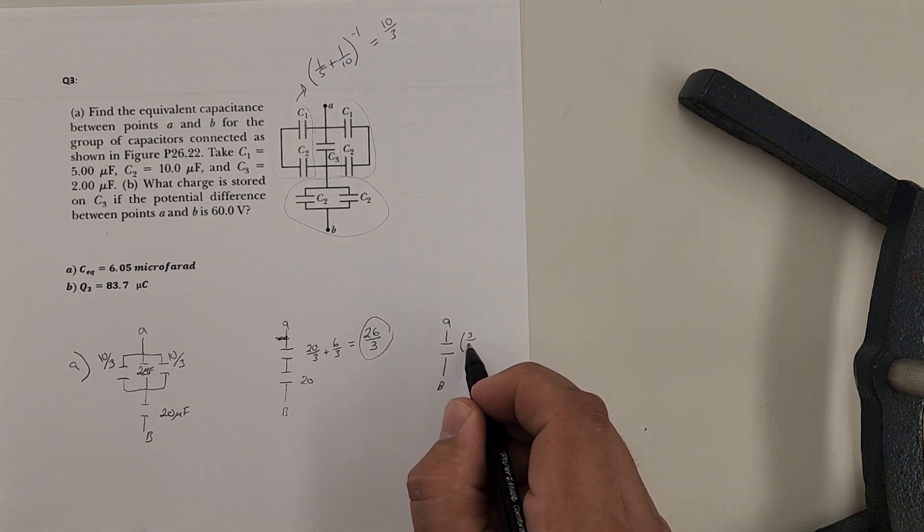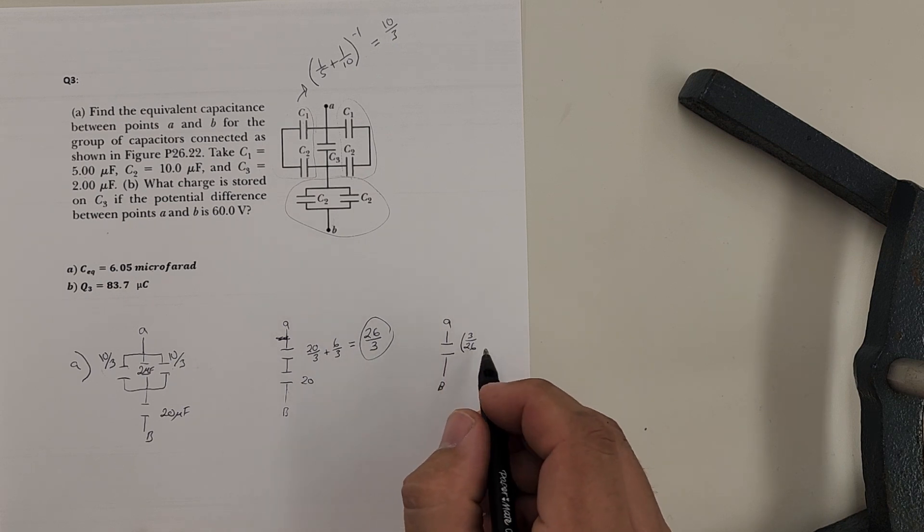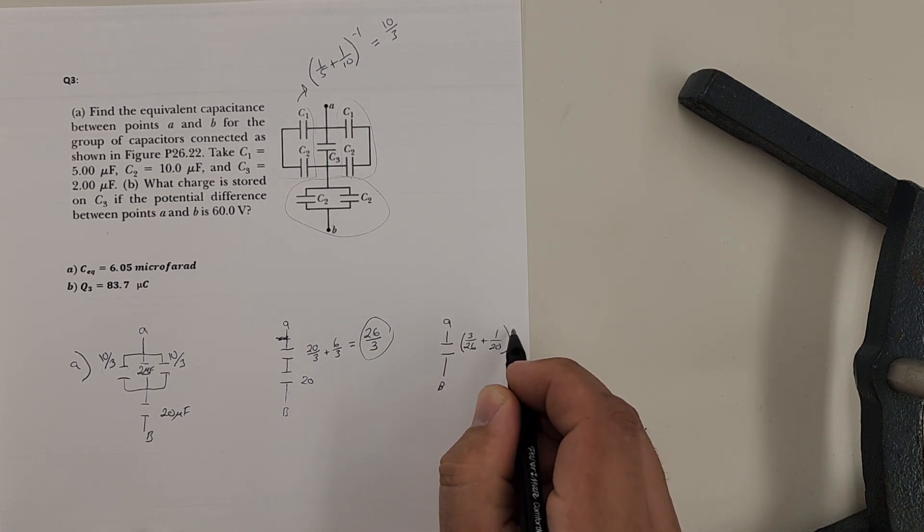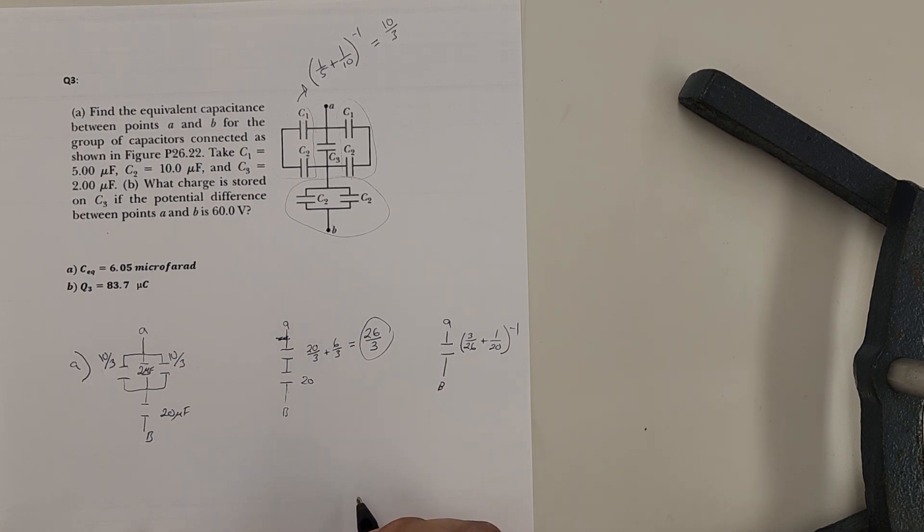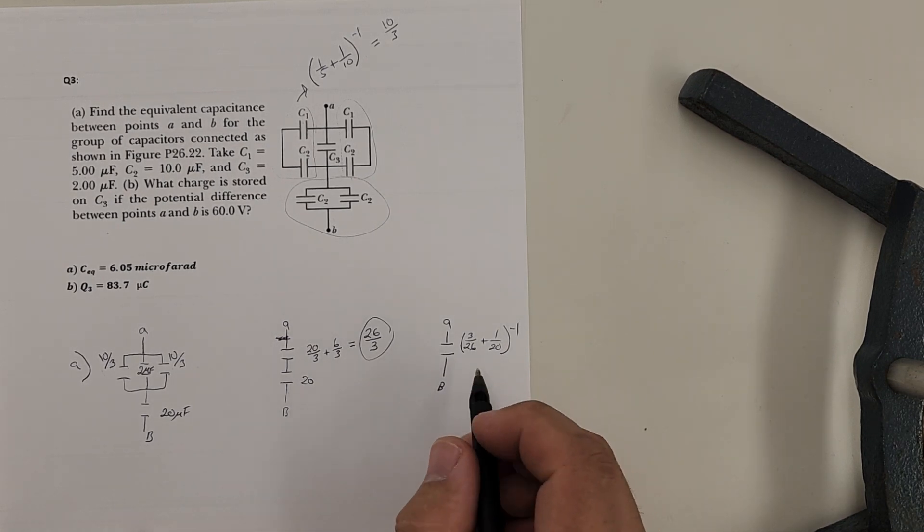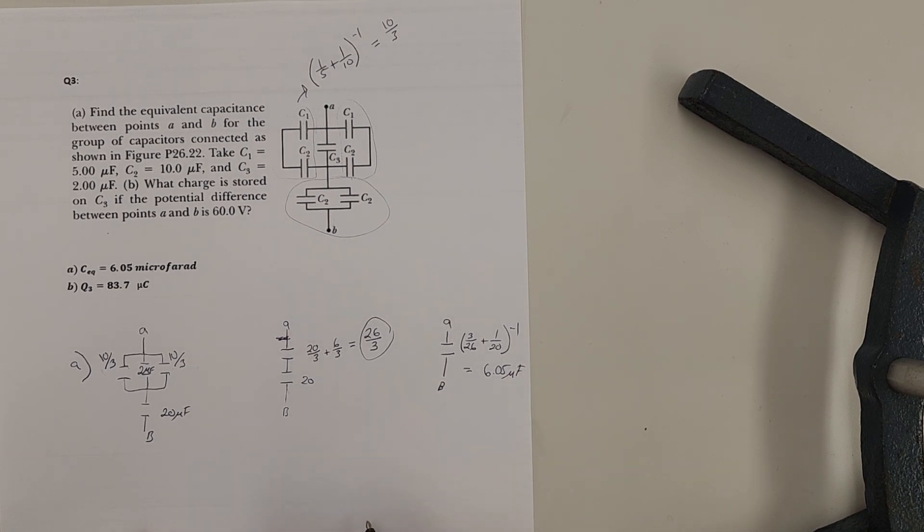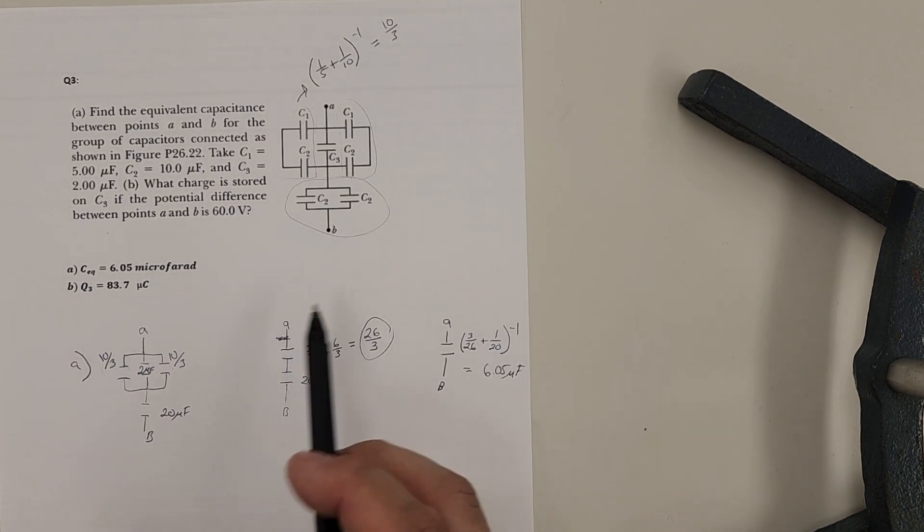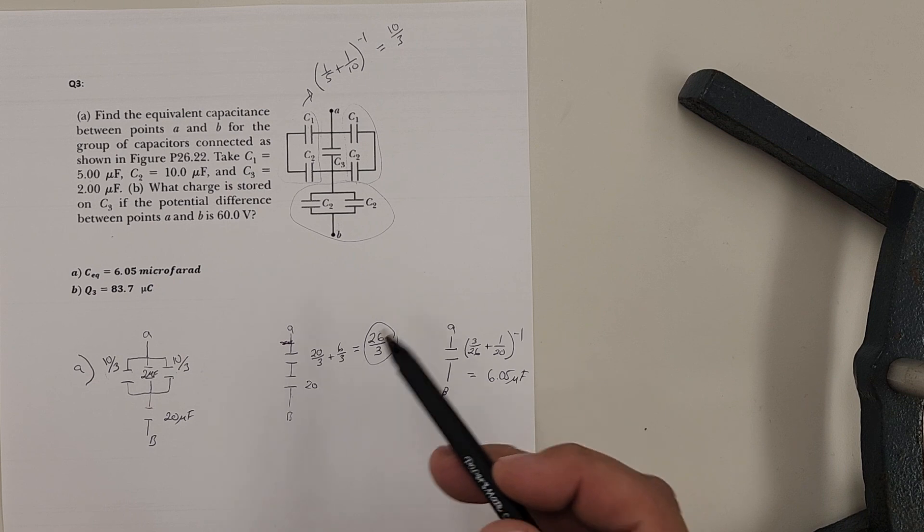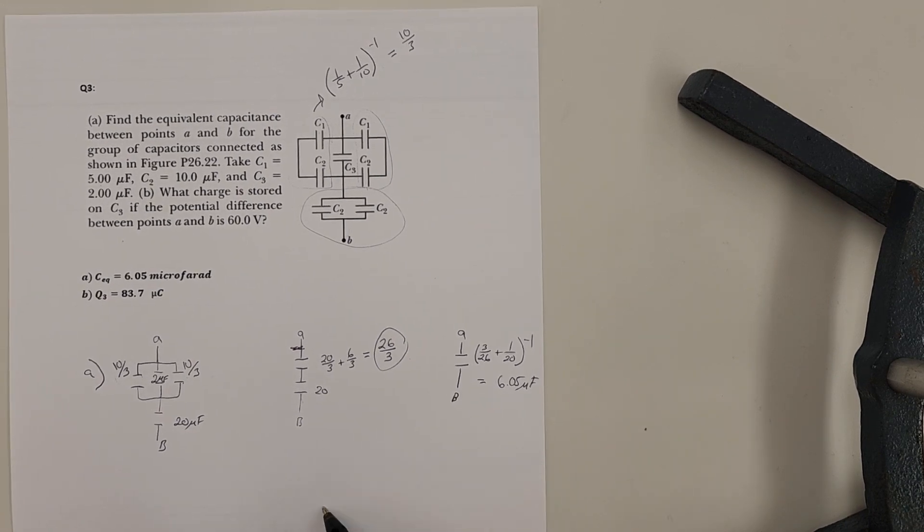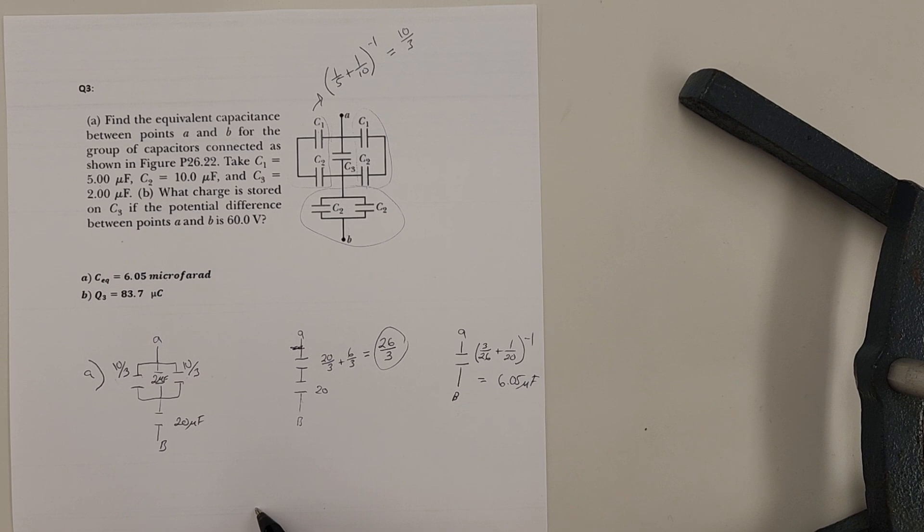Okay. So in series they gotta get flipped over. We're gonna have three over twenty six because it'll be the inverse of this plus one over twenty to the negative first. A calculator can easily do that. When we do that out you'll get six point zero five microfarad because we were in microfarad the entire time. And that's where you get your answer up here of six point oh five. You can of course put these in decimals right from the get-go. If you'd like I like to leave them in fractions. It makes the flipping over a little easier to do in your head. But absolutely you can use your calculator throughout the whole thing.